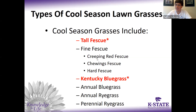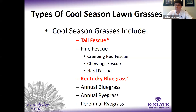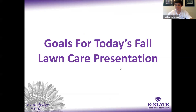Fine fescues — creeping red fescue, chewing fescue, hard fescue — and rye grasses were covered last week. These are probably not the best grasses as a total lawn grass because they struggle in the heat and drought of our summers. They may be mixed in bags of grass seed, but as far as overall cool season grasses best for most of Kansas, tall fescue and Kentucky bluegrass are the ones to go with.